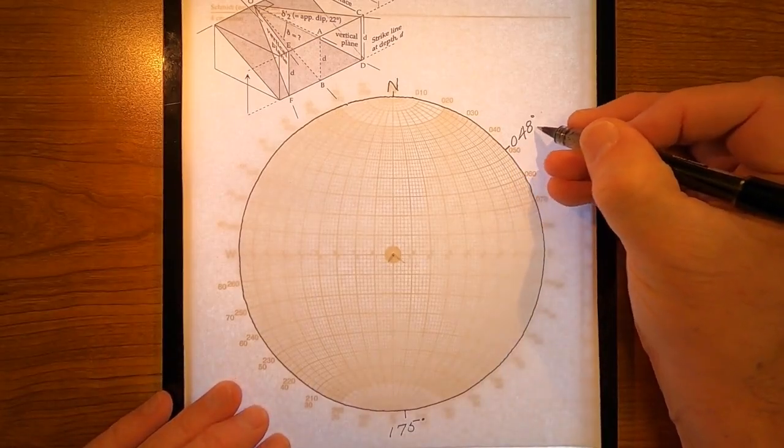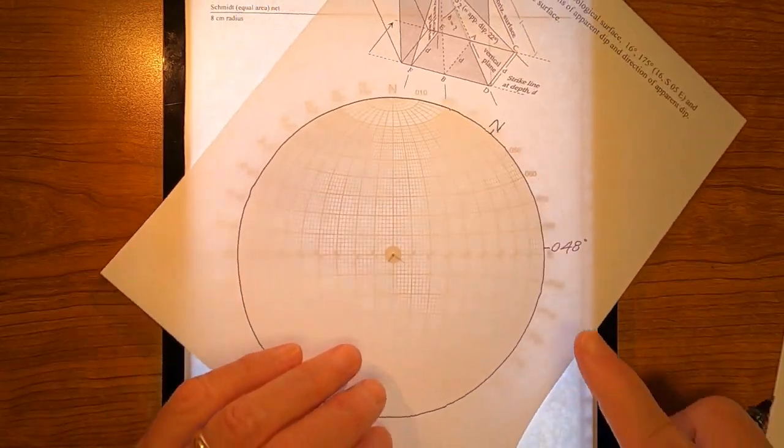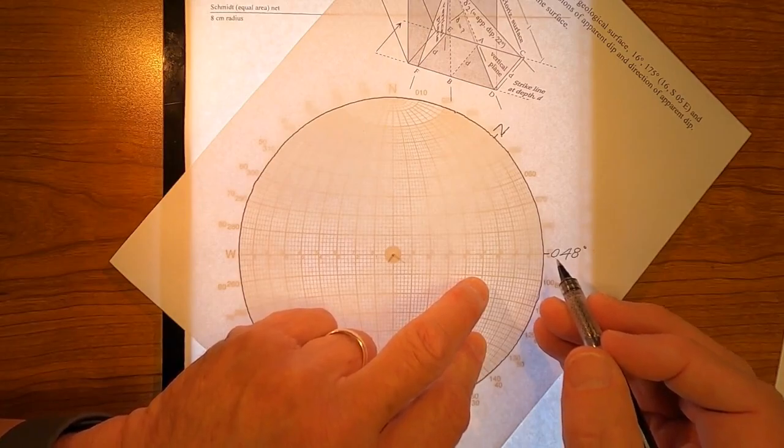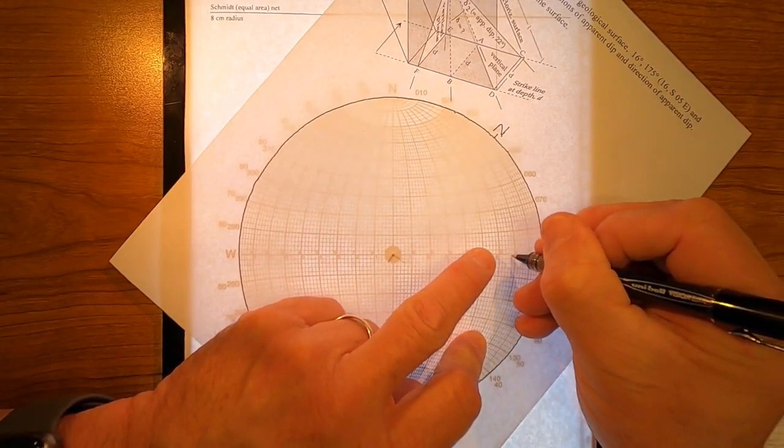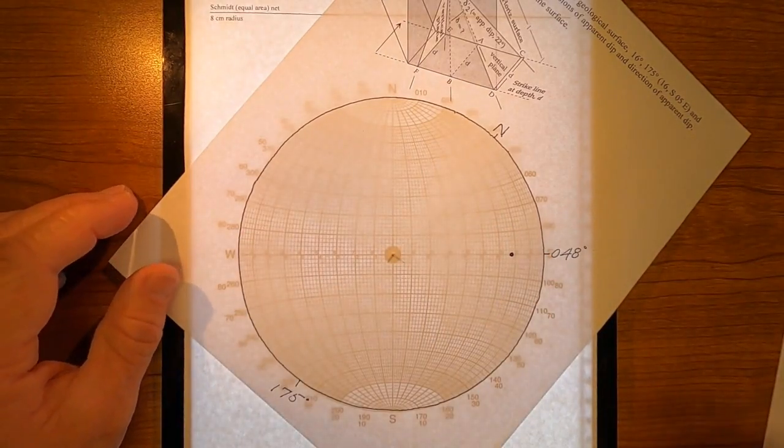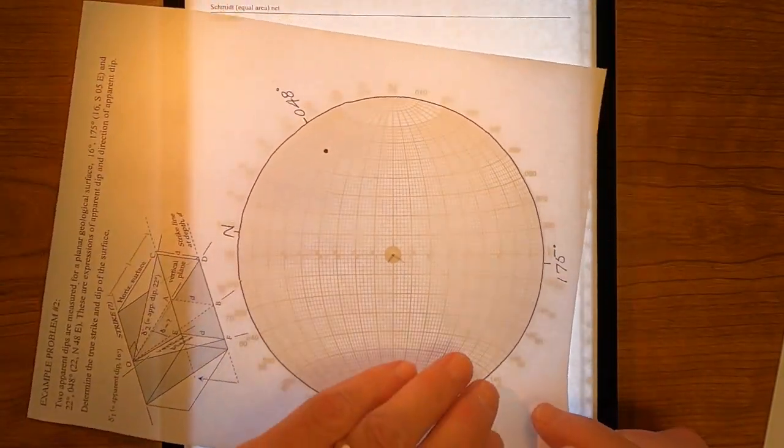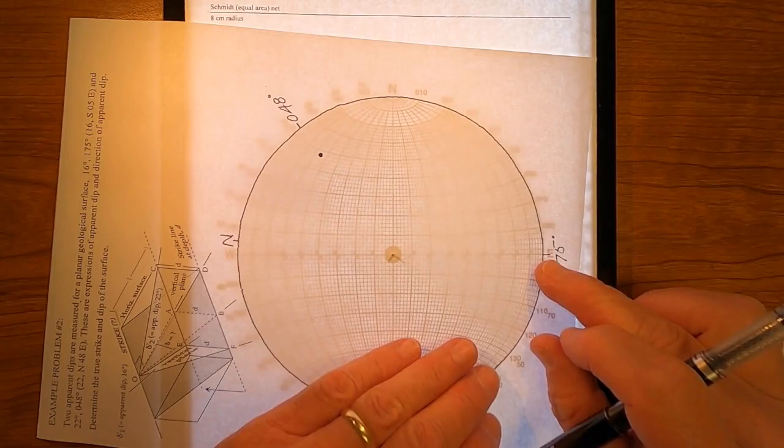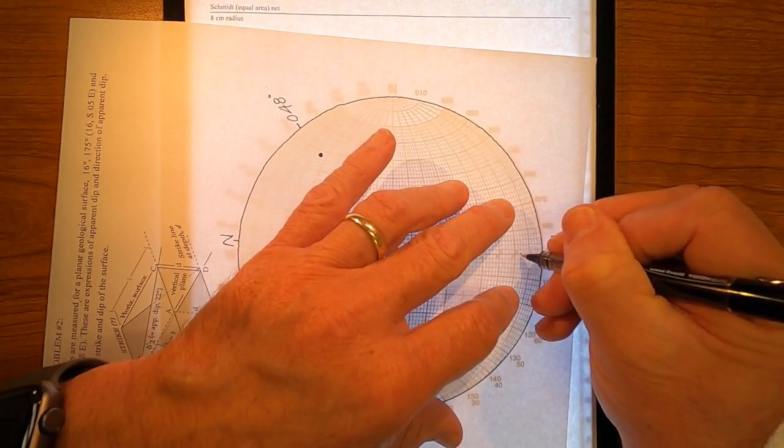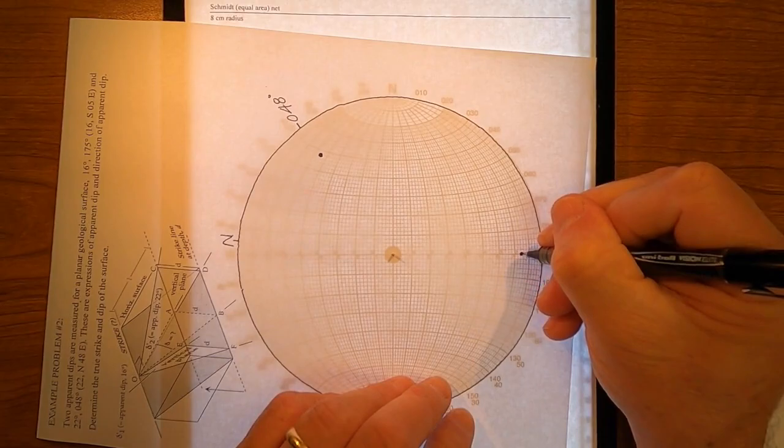I'm going to bring 048 down to the east-west axis, and I'm going to count the vertical angle. For that one, it is 22 degrees, 10, 20, 22. That is 22 degrees in the direction 048. The other one, 175, and 16, so it's 16 degrees in this direction, 10, 16 degrees, right there.